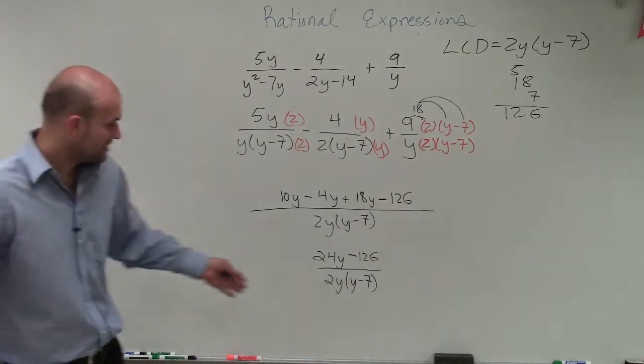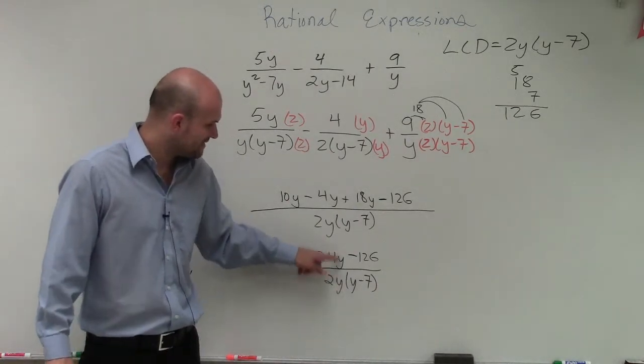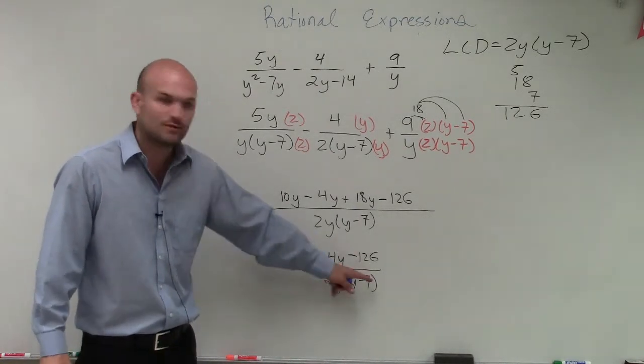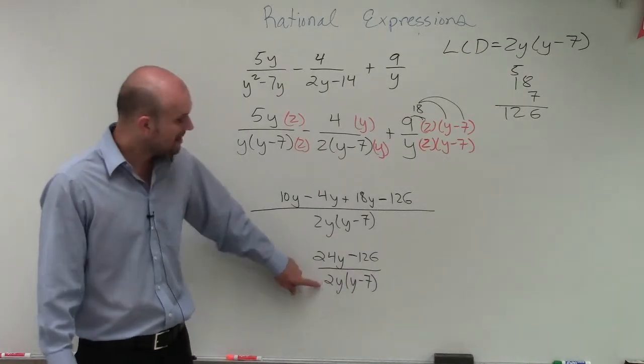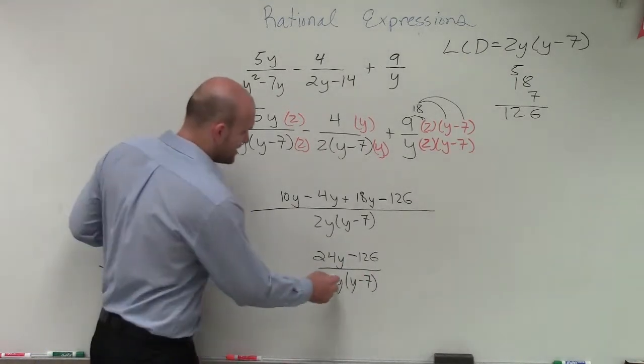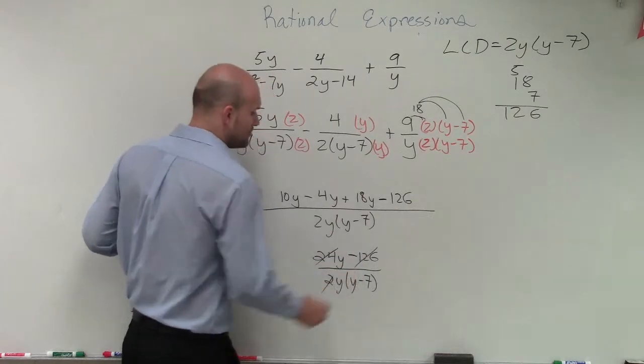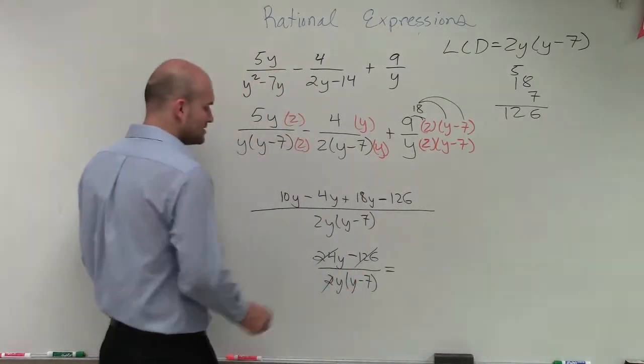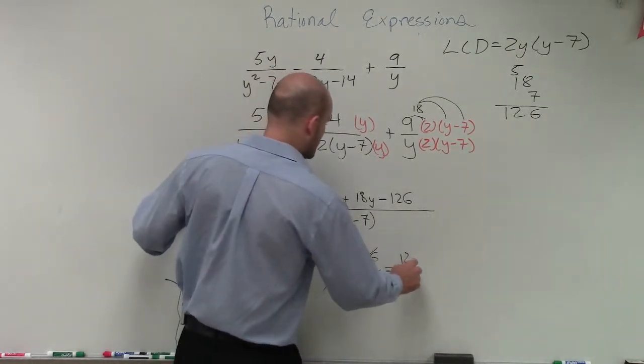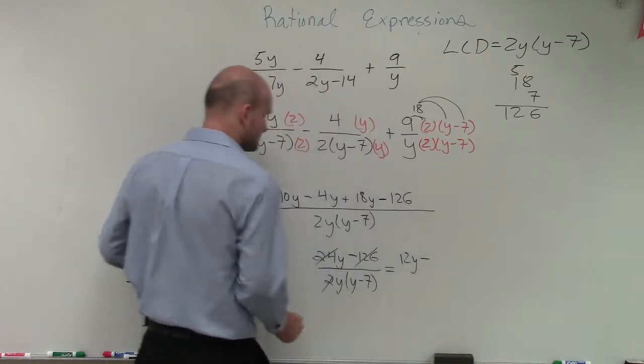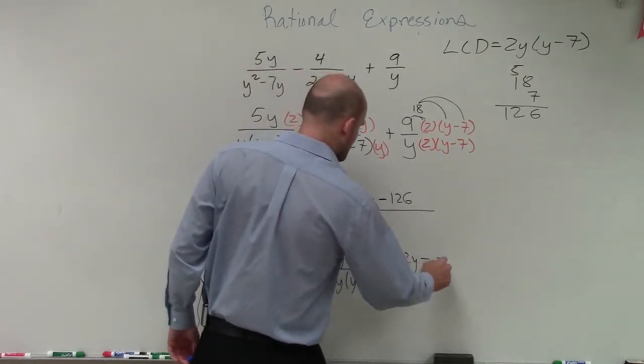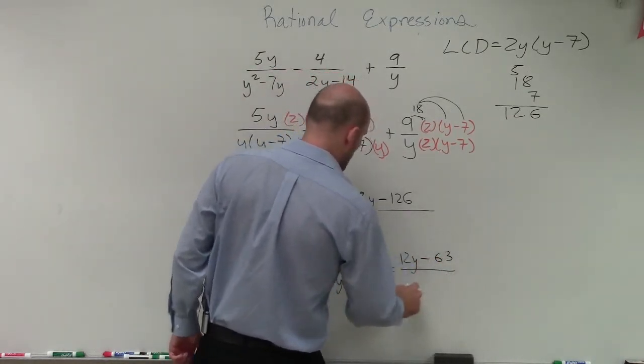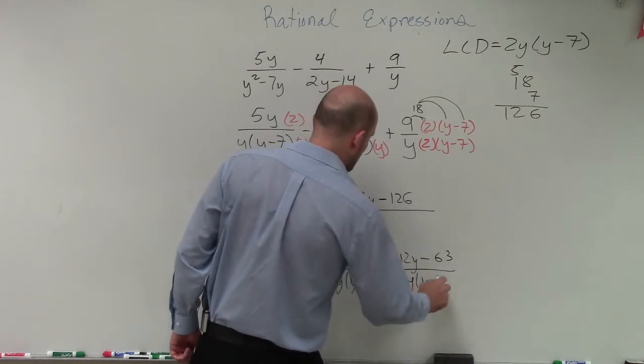Now, what we notice is I can't divide the y into both those terms. I can't divide the y minus 7 into both those terms. But I can divide out the 2. So if I divide a 2 into each one of my numerators, I can make this into a 12y minus, let's see, 63, over y times y minus 7.